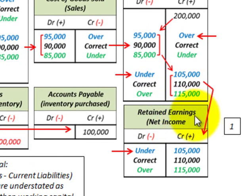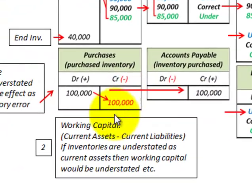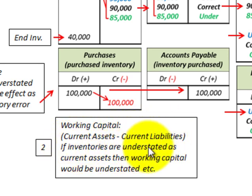Remember that net income flows into retained earnings and affects it in the same fashion. So overvalued inventory means undervalued retained earnings. Also consider working capital: current assets minus current liabilities. If inventories are understated as a current asset, then working capital would be understated as well.